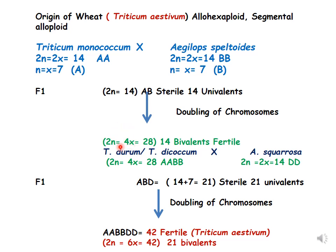This tetraploid was an allotetraploid with 28 chromosomes present in 14 bivalent form, and it was fertile. This was later named Triticum durum or Triticum dicoccum. It is designated as 2n = 4x = 28, genome AABB — representing four sets of chromosomes.